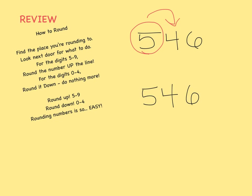For the digits 0 through 4, round it down, do nothing more. So since this is a 4, we're going to round the number down, which means the 5 stays the same. Everything to the right becomes a 0. So 546 rounds to 500 when rounded to the nearest hundreds place.